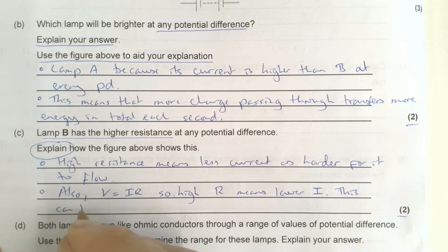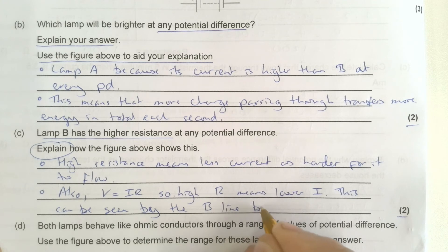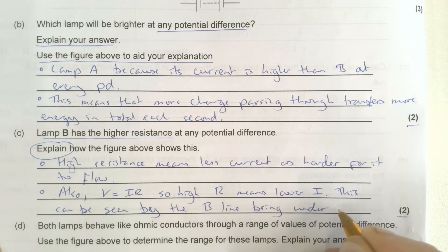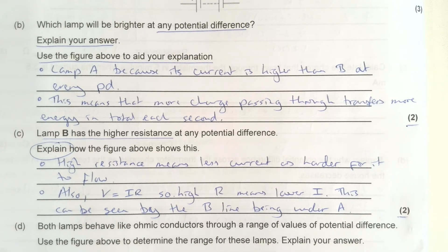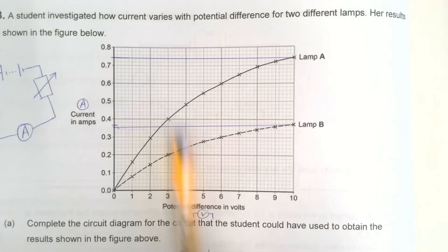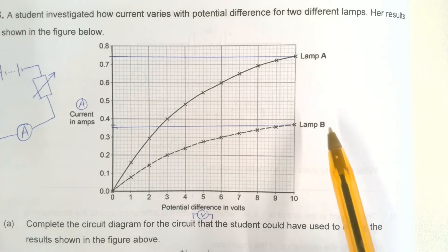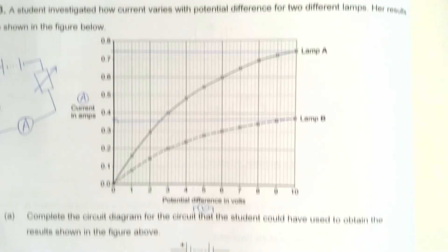I want to explain how the figure shows this. This can be seen by the B line being under A. Peculiar question this, it's actually not very good. Gradient is not resistance. You can't use gradient as a proxy for resistance, so be careful. The only time you can use gradient for resistance is if you're looking at an ohmic resistor, which we're not. We're looking at bulbs. An ohmic resistor would be a straight line through the origin. I know the mark scheme says the gradient of B is always less, be careful with that. That's bad physics actually. I don't know where this question came from. It's an old question, it's not one from the new exam specification.